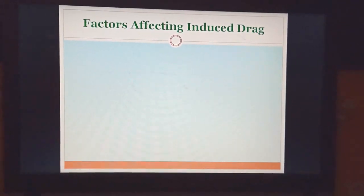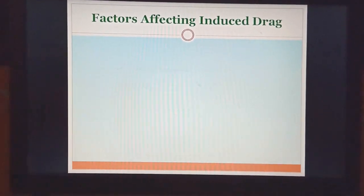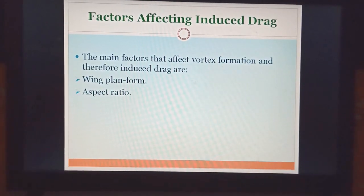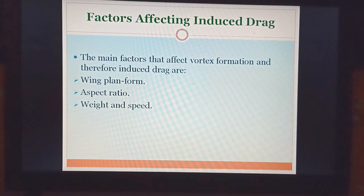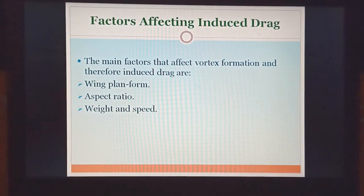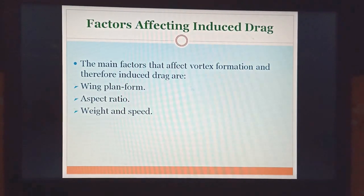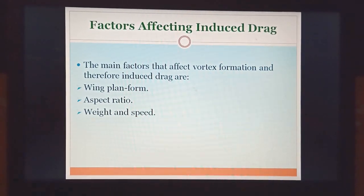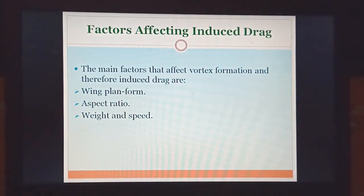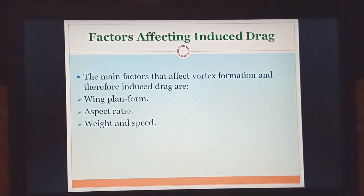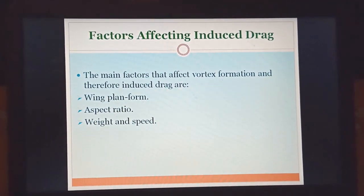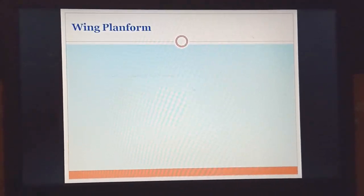Now let's see what factors affect induced drag. The three main factors are: wing planform, aspect ratio, and weight and speed. Wing planform refers to the shape of the wing. Aspect ratio refers to the size of the wing. We will look at each of these individually and see how they affect induced drag.